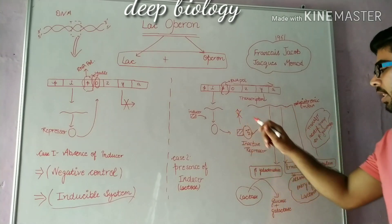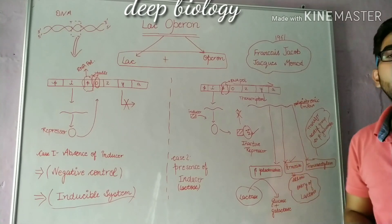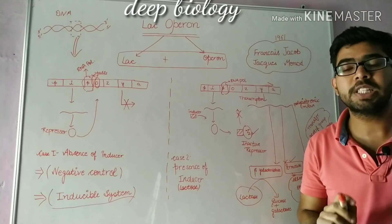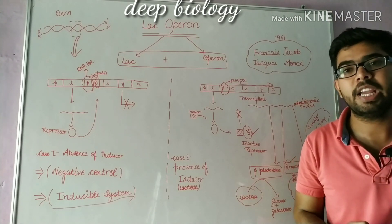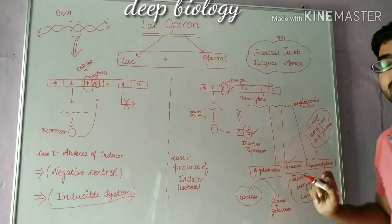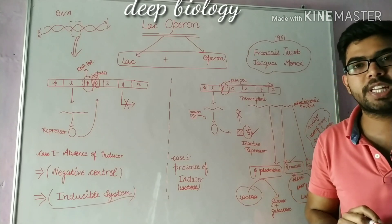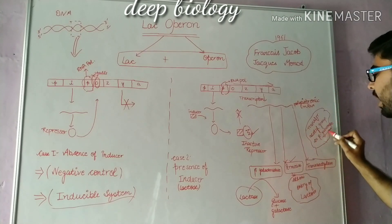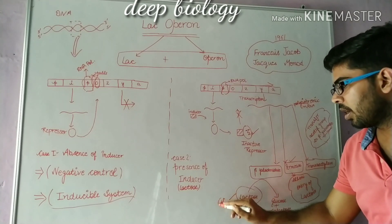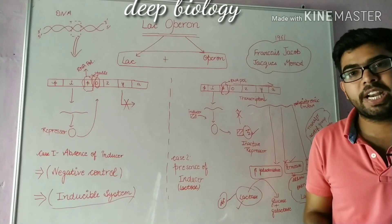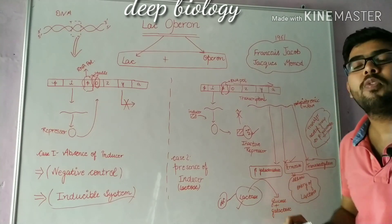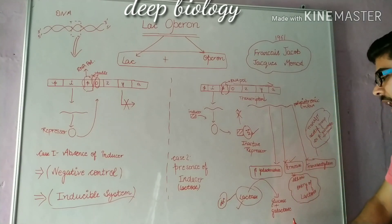First, the permease enzyme will show its action — it will allow entry of lactose from the surrounding of E. coli into the cytoplasm. Then transacetylase transfers the acetyl group to beta-galactoside, where the beta-galactoside in this case is lactose with the acetyl group. Finally, beta-galactosidase allows breakdown of lactose into glucose and galactose.